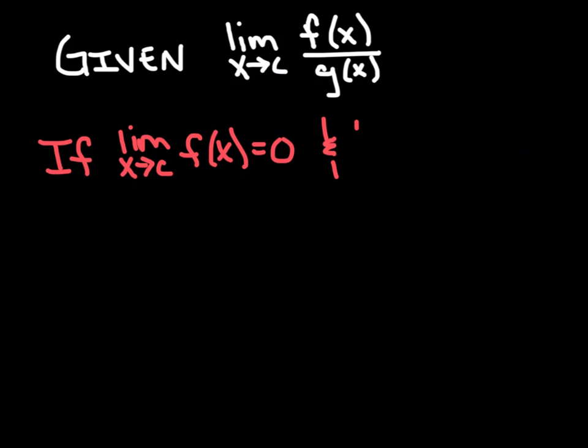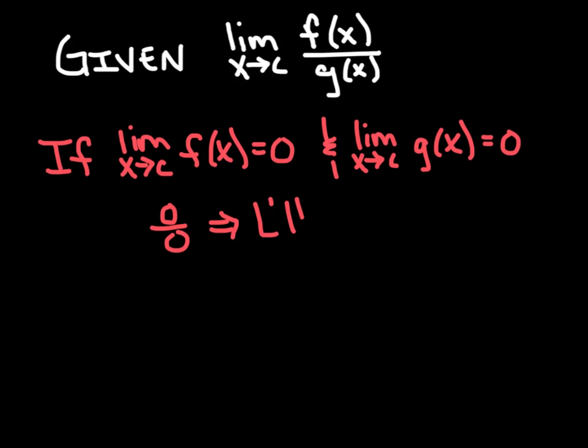and the limit as x approaches c for g(x) also equals zero, well then there's our indeterminate form. And any time we have the indeterminate form, we can now say that L'Hopital's rule is now applicable.